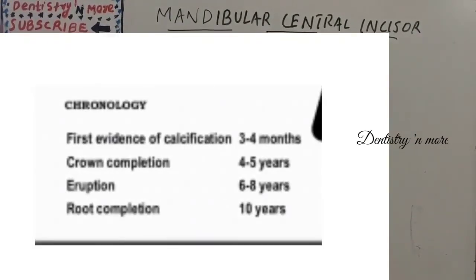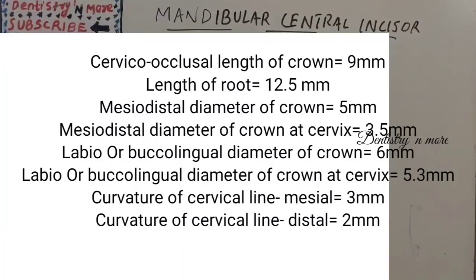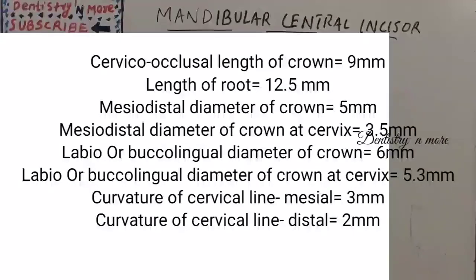The chronology: first events of calcification occur at three to four months, crown completion by four to five years, eruption by seven to eight years, and root completion by ten years. The dimensions are: crown length 9 mm, root length 12.5 mm, mesiodistal diameter at contact area 5 mm, and 3.5 mm at cervix. The labiolingual diameter is 6 mm and 5.3 mm at cervix. The curvature is 3 mm mesial and 2 mm distal.